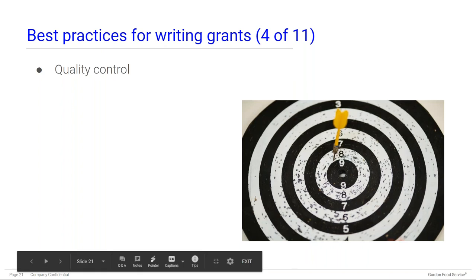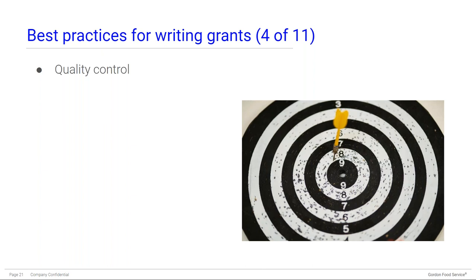Be sure to include quality control. Quality control is especially important when you have multiple people collecting your data and when data collection occurs over long periods — days or months. You need to make sure data are collected in the same manner regardless of who collected them, whether on day five of year one or day 155 of year three.